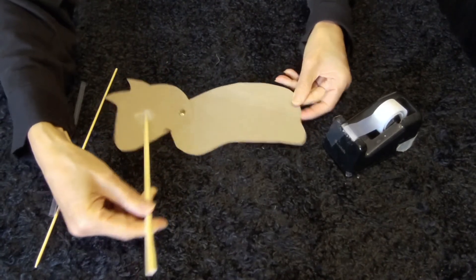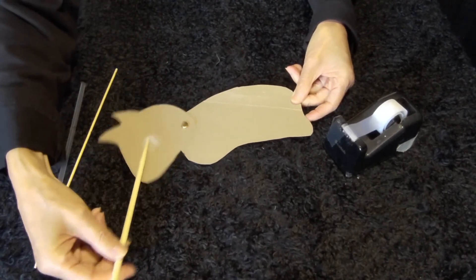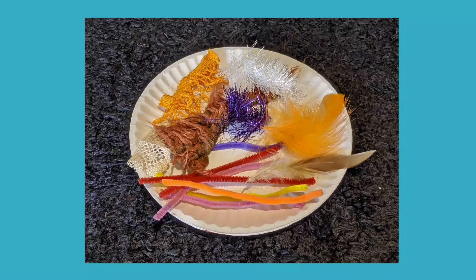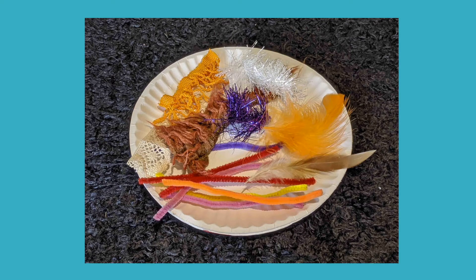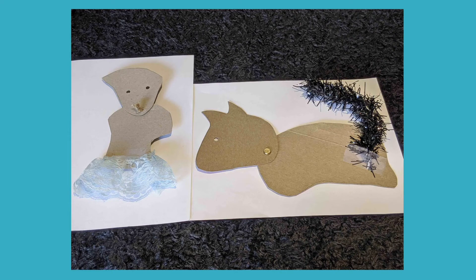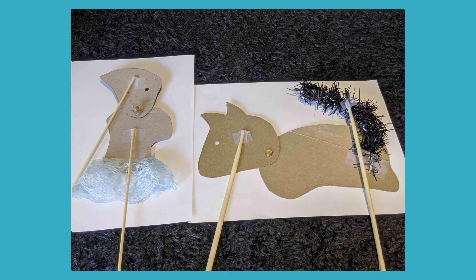If you can find material like feather, pipe cleaner, lace, or tinsel, you can add them to your puppet to make the character more clear. For example, a piece of tinsel as a tail for the cat. A piece of lace as a skirt for the girl. Finally, add one more control to the body or the tail to help with the movements.